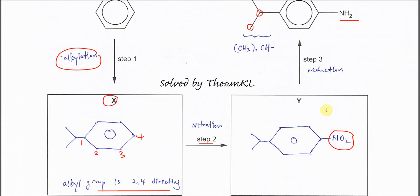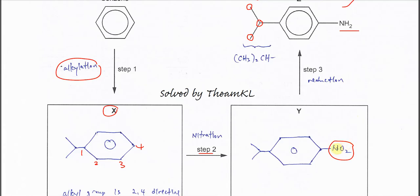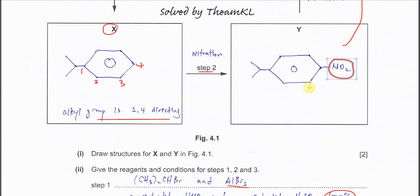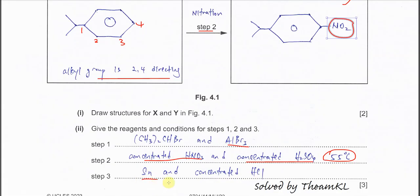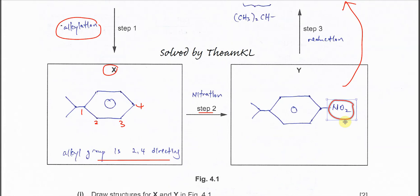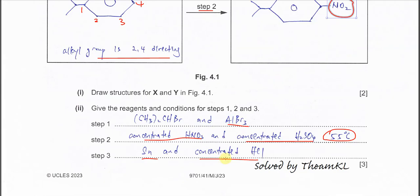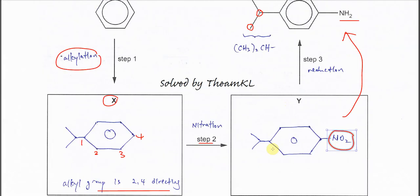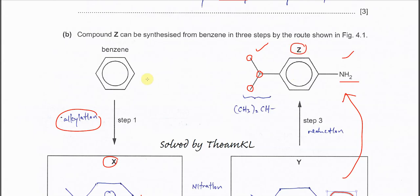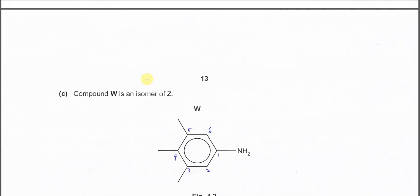After forming this nitrobenzene with the nitro group, this nitro group needs to undergo reduction. We have to convert NO2 to NH2 - remove oxygen, add hydrogen. For this nitrobenzene, if we want to reduce it, we must use tin and concentrated HCl with heat. Then the nitro group will form phenylamine. This is how we make the product, compound Z, from benzene.